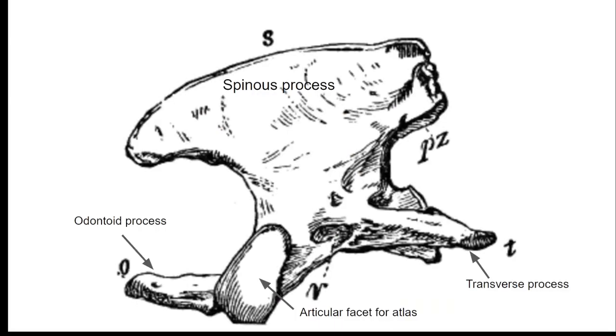The mammalian axis, however, differs from the other cervicals due to its relatively large spinous process and small transverse processes.